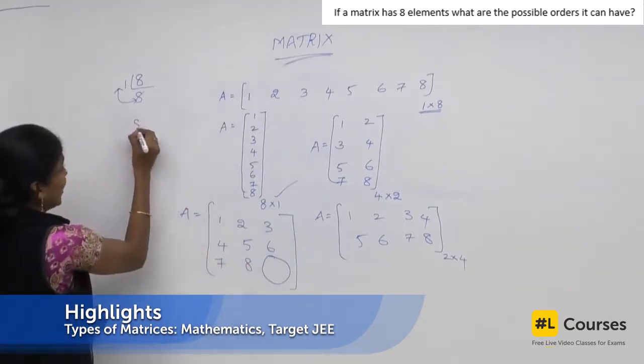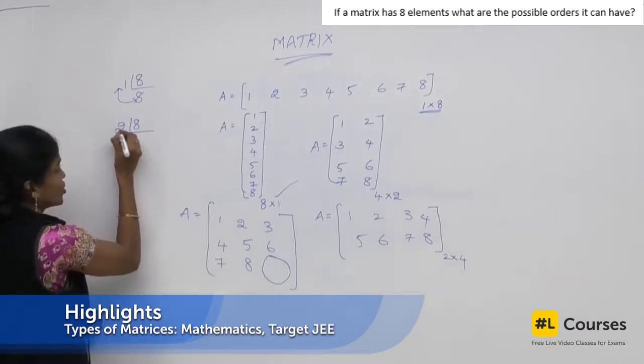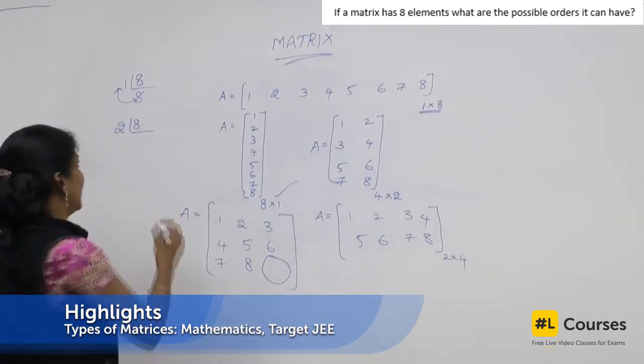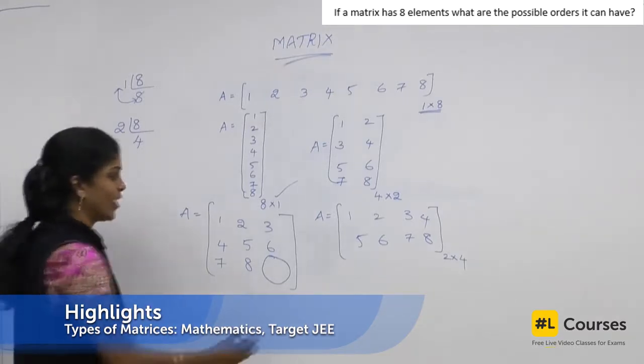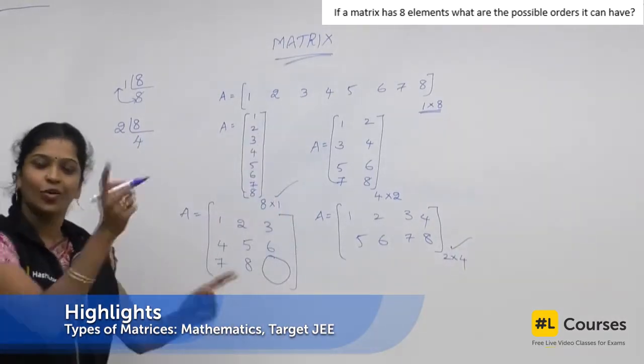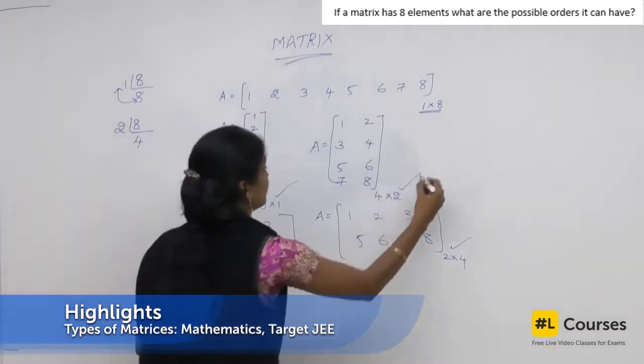Now, start dividing with the next number. That is 2. How many times? That is 4 times. So, what is the order? 2 by 4. So, here is your pattern. What is the ultra of it? 4 by 2.